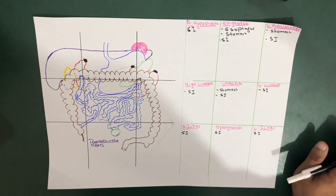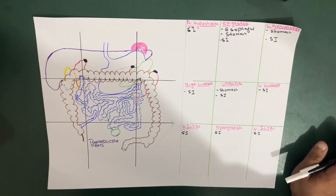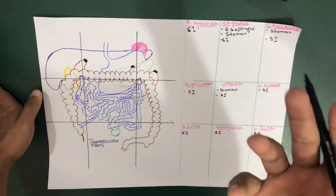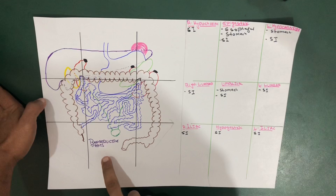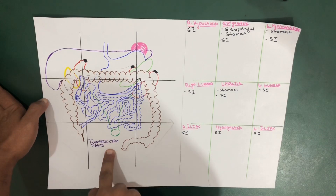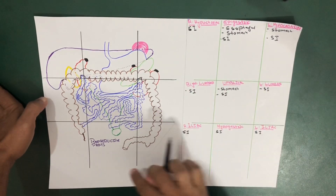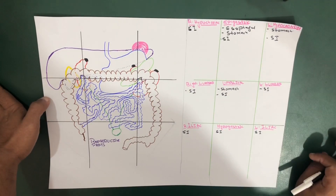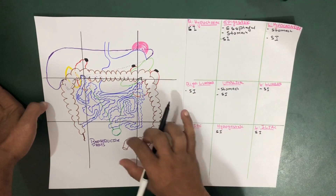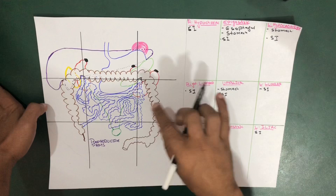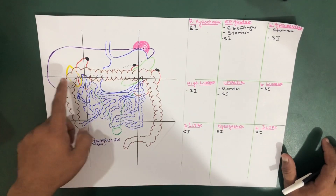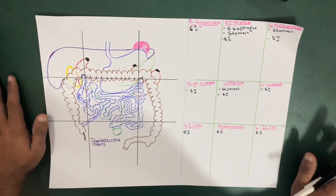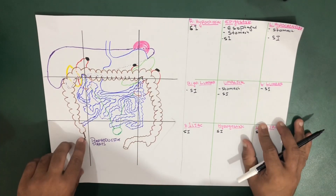Now moving from small intestine to the large intestine. In the case of the large intestine, we will use the names of its different parts. To give a quick review: the large intestine occupies all the space except the hypogastric region, because in the hypogastric region it converts into the rectum. The rectum is defined separately from the large intestine, so the rectum is in the hypogastric region.